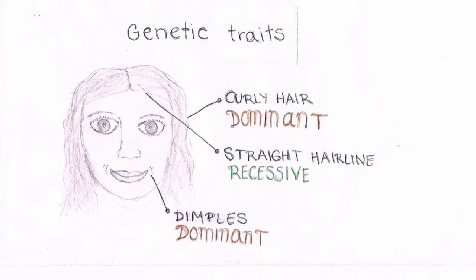Dominant traits, like curly hair and dimples, normally have a better chance at being present on the child, as long as at least one of the parents has this characteristic.